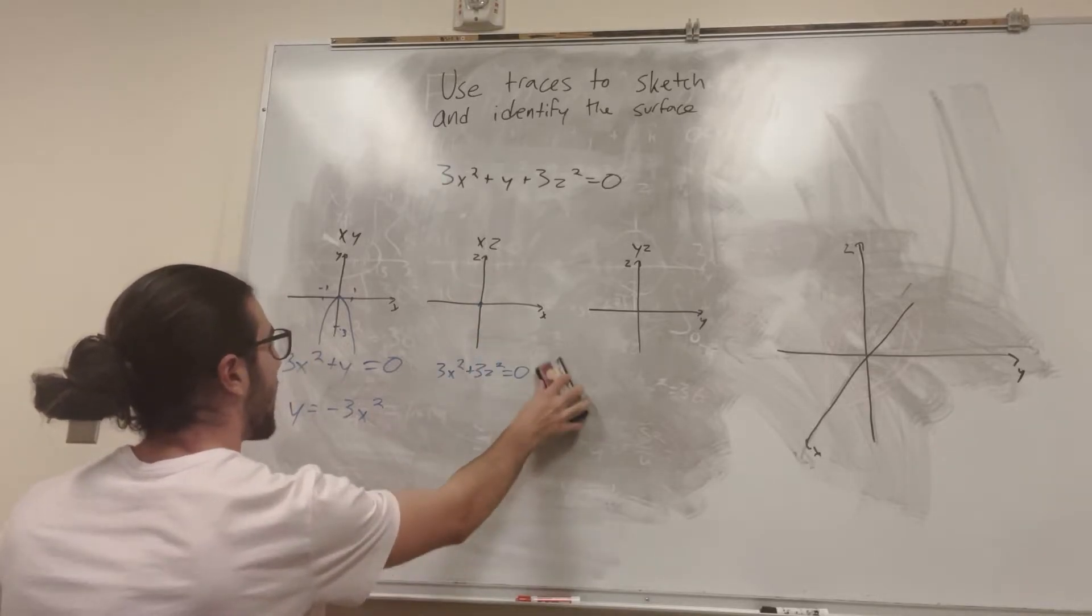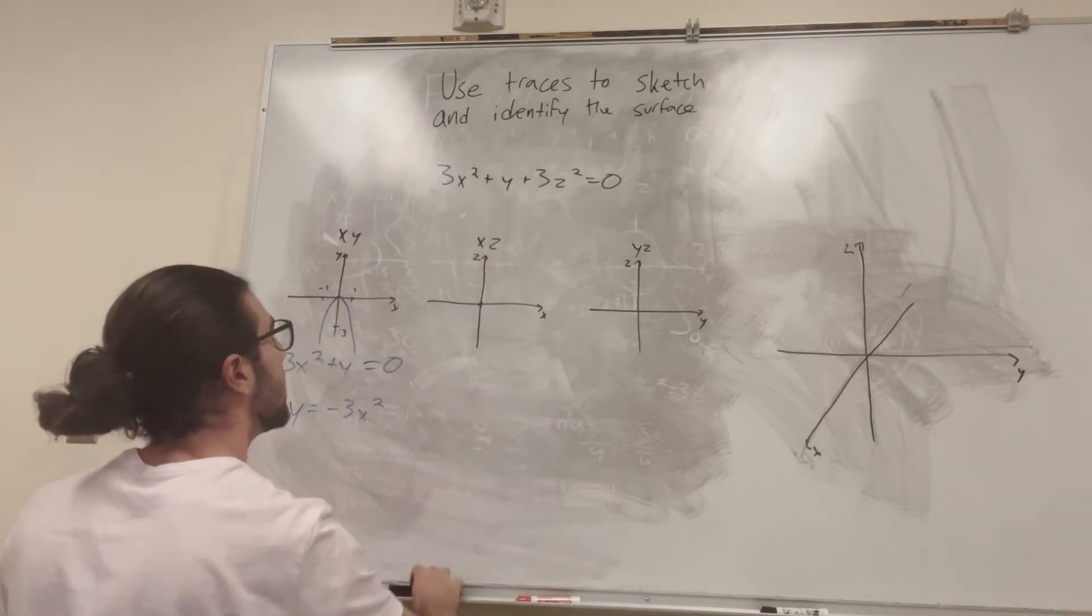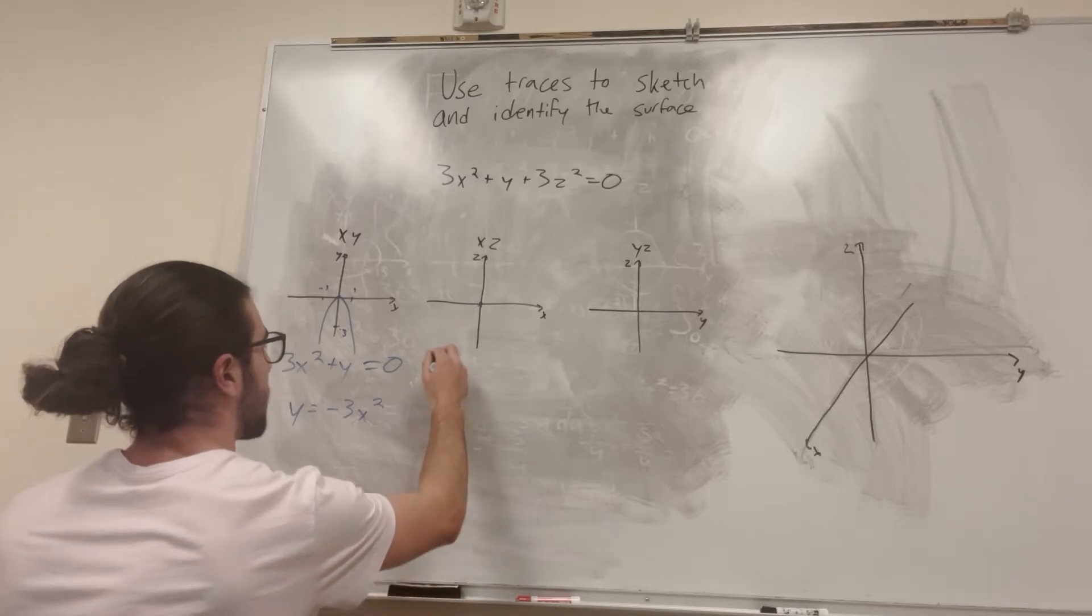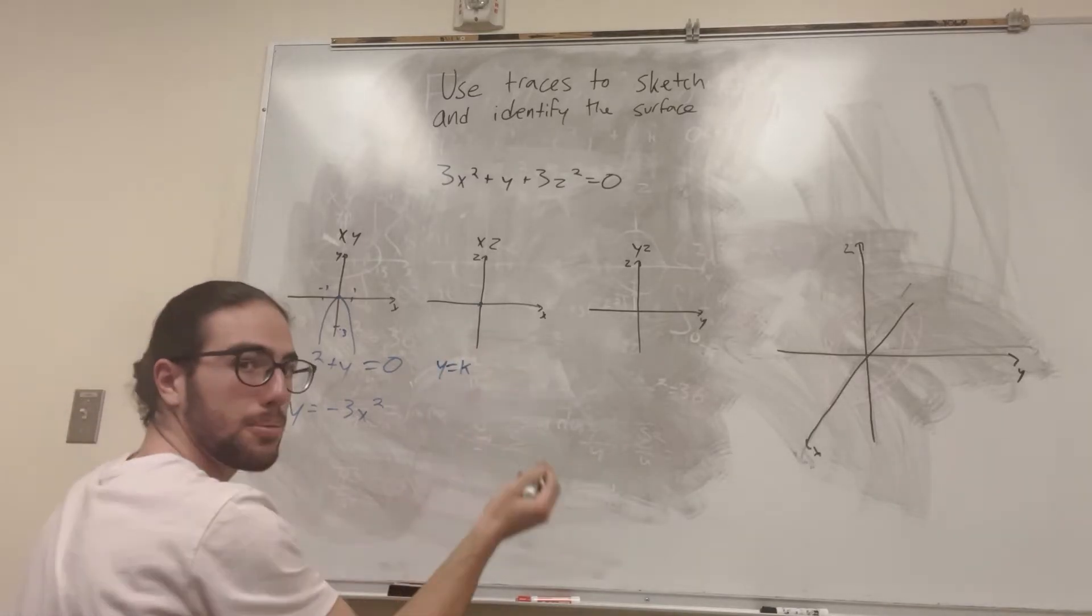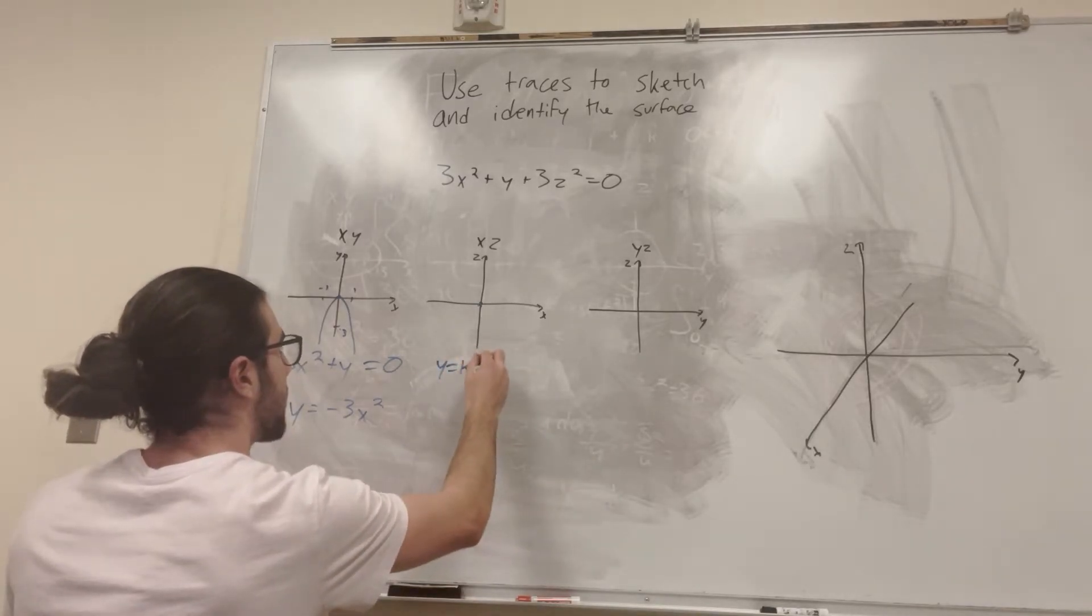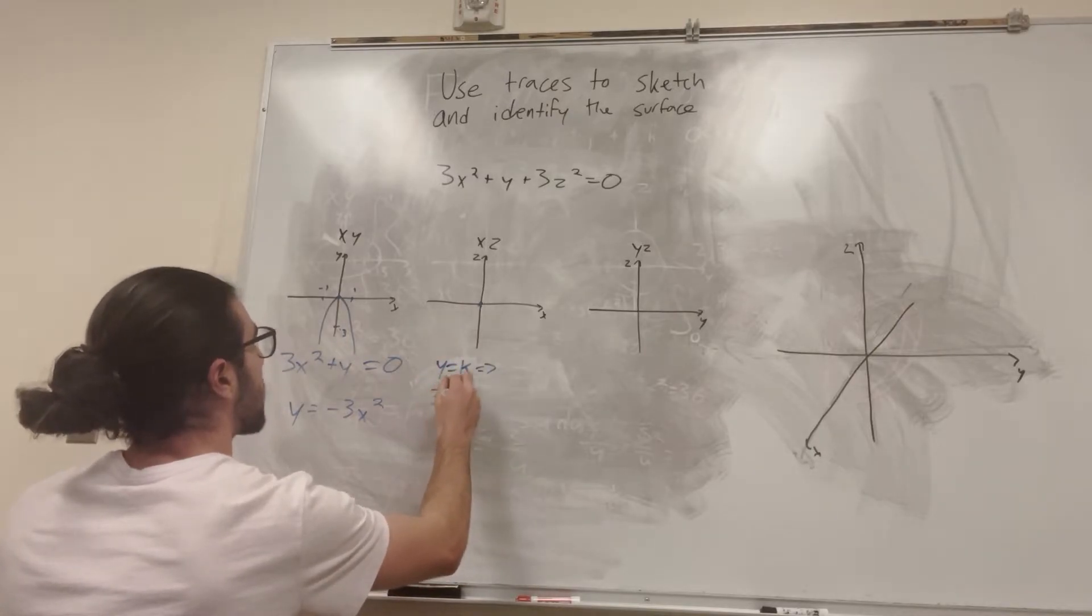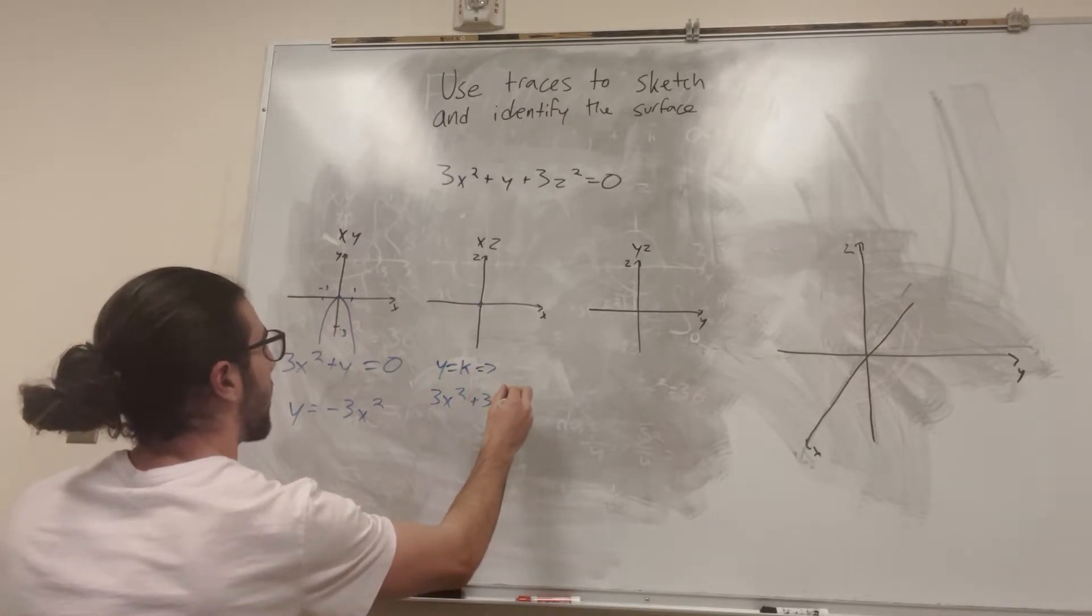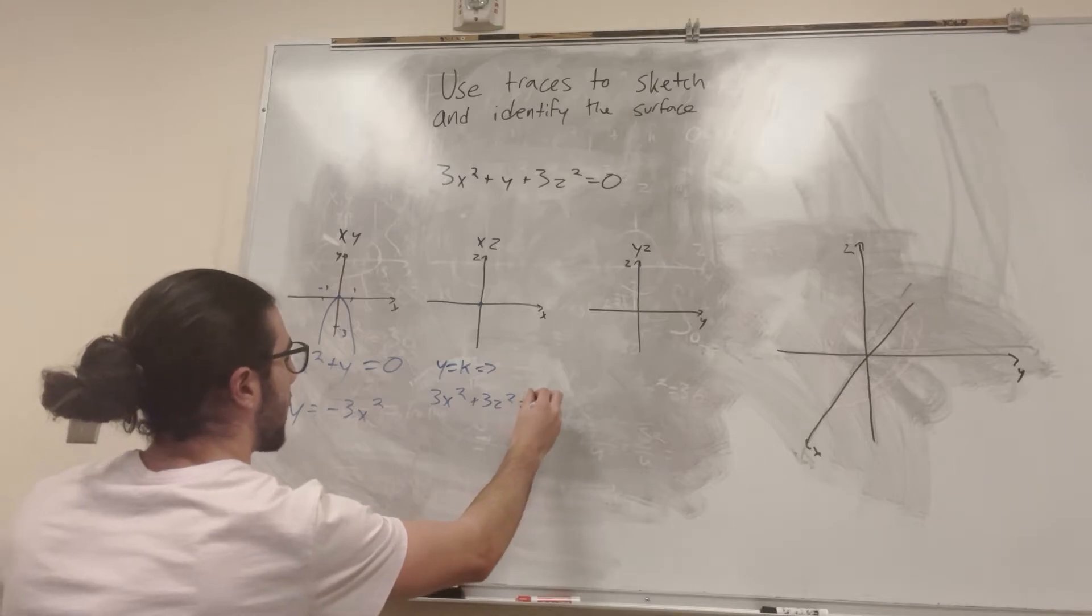So actually what you can do is you can set y is equal to k, a constant. So let's say that y is equal to k, a constant. Just any number really is what I'm saying. So therefore, we have that 3x squared plus 3z squared. I'm going to subtract the y. It's going to be equal to negative k, right?